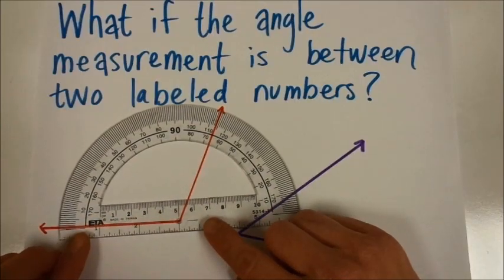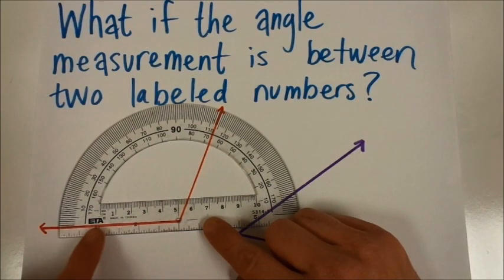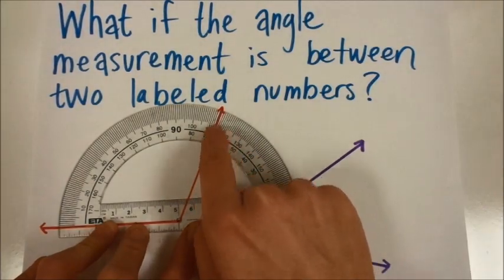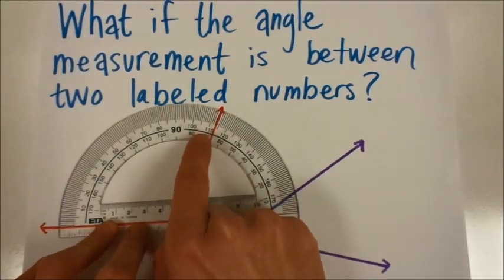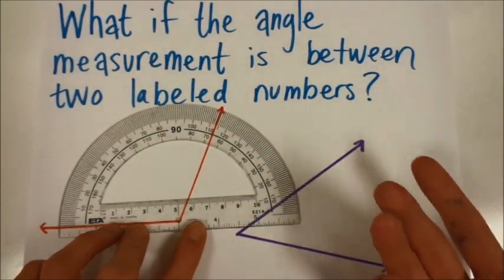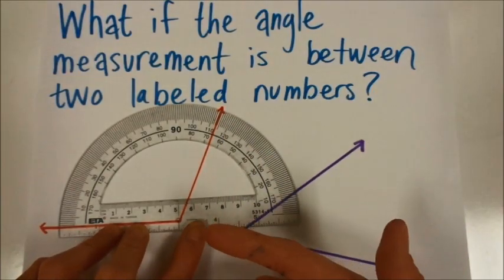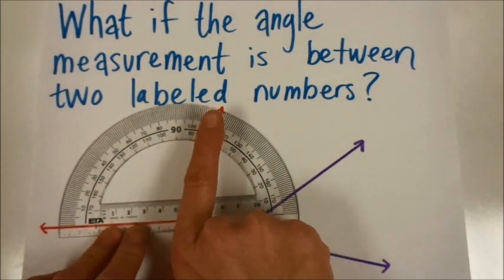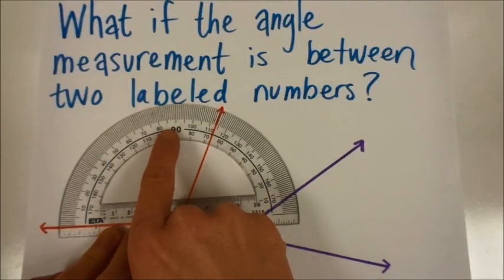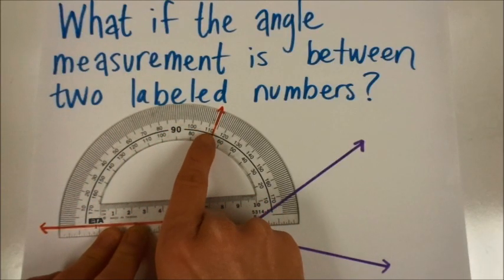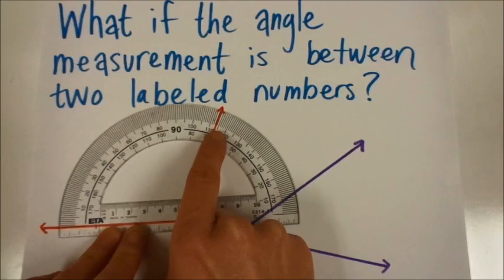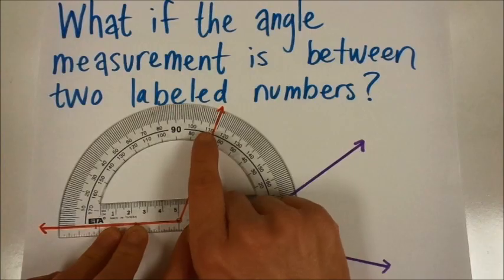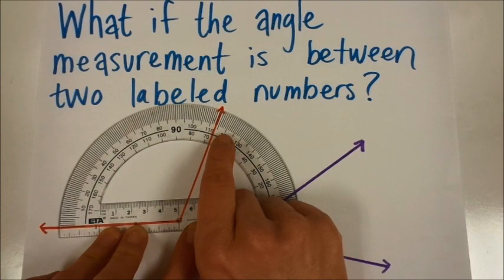Again, I'm going to match my vertex up to the hole and make sure that the ray is lined up all the way out here. And then you can see that it is falling right here in between 110 and 70 and 120 and 60. So first of all, I'm going to think about which number am I going to use out of those numbers? Well, thinking about it opening up in this direction, here's 10, 20, 30, 40, 50, 60, here's 90. I know that it's going to be the bigger numbers, it's also obtuse, so that makes sense.